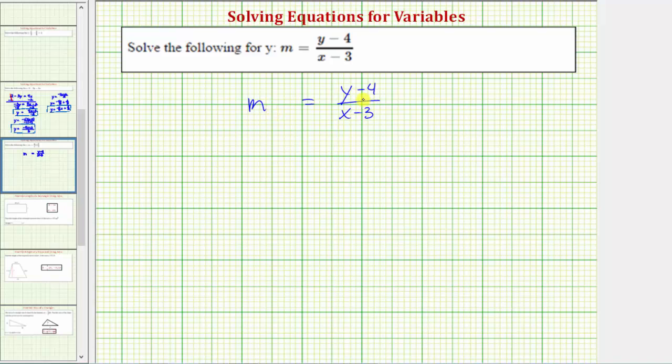In this case, we only have one fraction, and therefore, we can clear the fractions from the equation by multiplying both sides of the equation by the quantity x minus three.